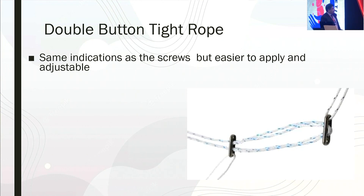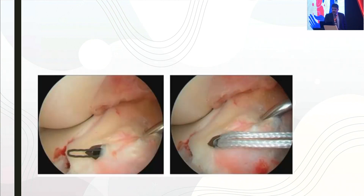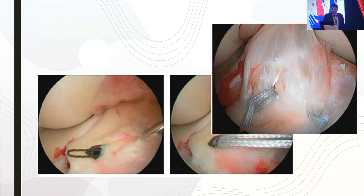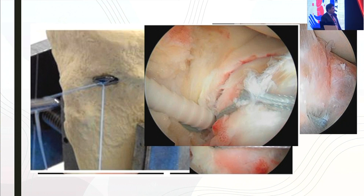Double button tight ropes can also be used in place of screws and are generally easier to apply. For suture fixation, this technique works for both large and small fragments with minimal damage to the physis, but it is technically demanding. One of the commonest approaches uses a lasso, placing at least two sutures across the base of the tendon or bone, then either pulling them out through a tibial tunnel and fixing over a button, or using a knotless anchor to fix it inside the knee joint.